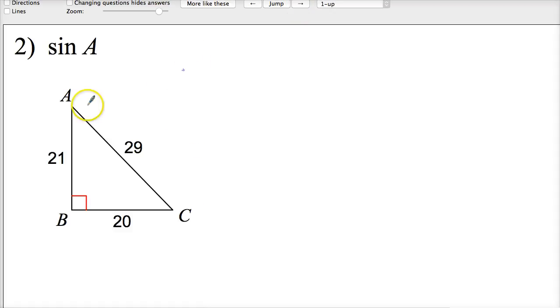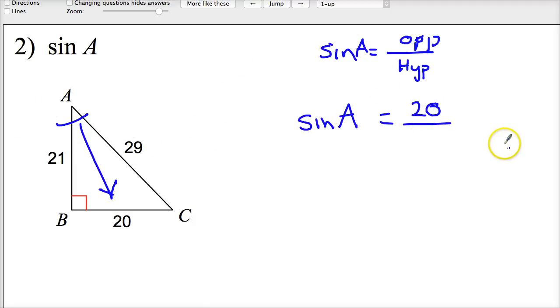Sine of A. Sine is opposite over hypotenuse. The sine of A here is what I'm looking for. The opposite side is the side that's across from it going straight out. It's the 20. The hypotenuse is the long side, so 29.